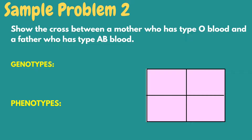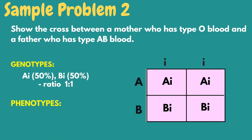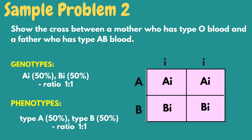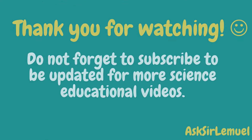Show the cross between a mother who is blood type O and a father who is blood type AB. The following could be the possible blood types of their offspring: blood type A, another blood type A, blood type B, and another blood type B. Because of that, the genotypic and phenotypic ratio of this cross will both be 1:1. Thank you for watching. Do not forget to subscribe to be updated for more science educational videos.